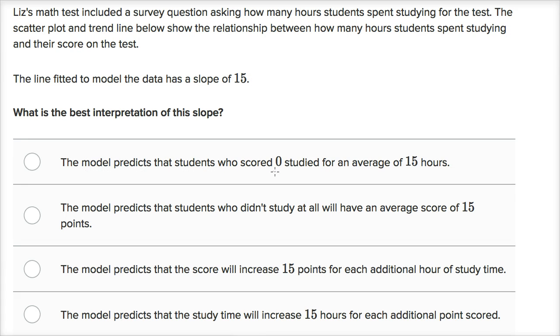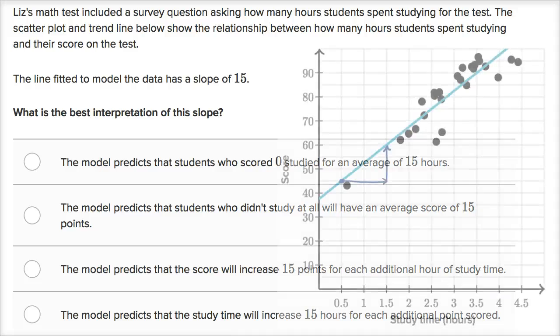The model predicts that the student who scored zero studied for an average of 15 hours. No, it definitely doesn't say that. The model predicts that students who didn't study at all will have an average score of 15 points. No, we didn't see that.